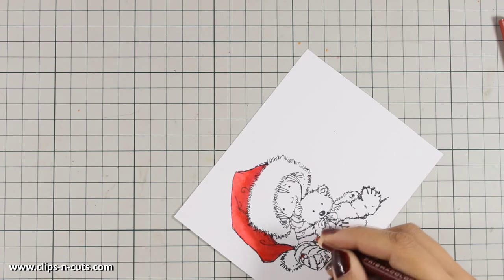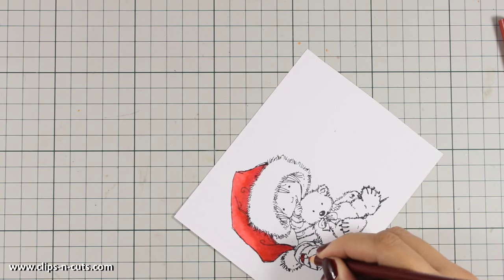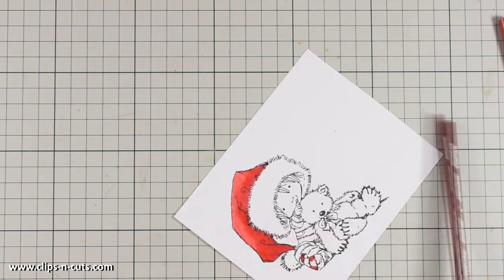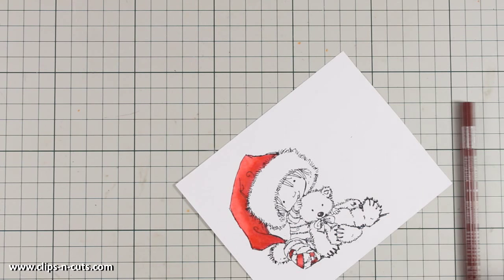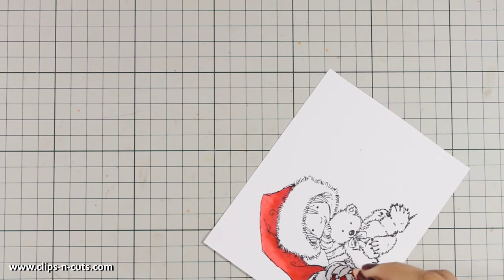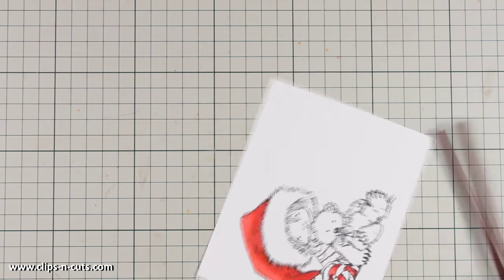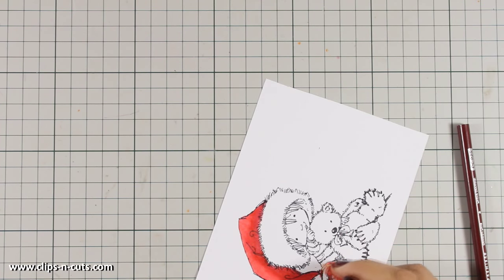For her stripes I am skipping the middle color. I am using only the lighter and the darkest color. The darkest at the edges of the stripes and the lighter at the center. For the white stripes I will be adding just a little bit of gray on the edges and blend it all out with white pencil.